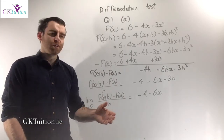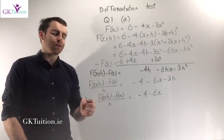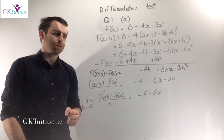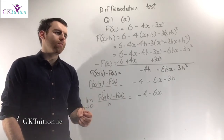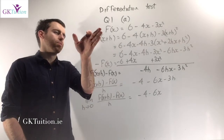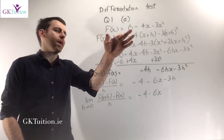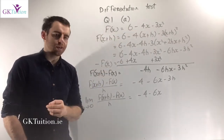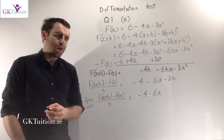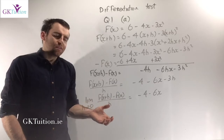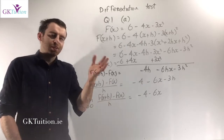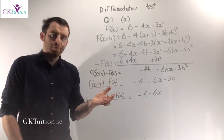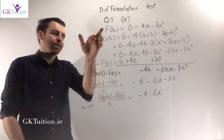For the first part of this question, we're given 10 marks for first principles. You're asked to differentiate from first principles f of x equals 6 minus 4x minus 3x squared. It's standard enough — basically the same as the examples we did in class.